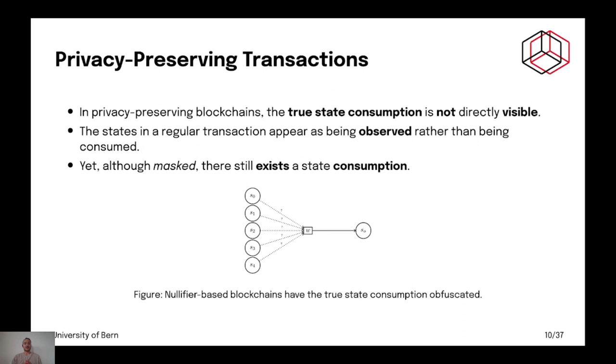The problem is with the TDAG. Well, if you have privacy preserving cryptocurrency, well, you don't see the true state consumption. So, you would only use observing edges. Now, observing edges can be used in the TDAG model can be used indifferently how many times on a state. Whereas, a state can only be consumed once. So, you can only link a state with one consuming edge at most once.